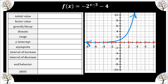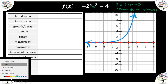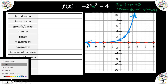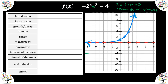This time we have a shift to the right three units, a shift down four units, and we do have a vertical reflection in which we will reflect across our new asymptote. Let's pencil in the new asymptote — it's going from y = 0 to y = negative four.